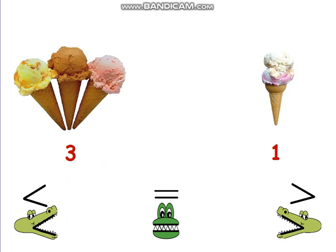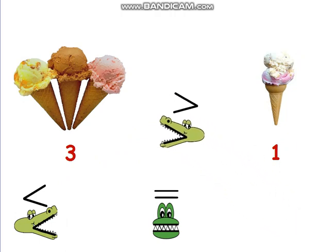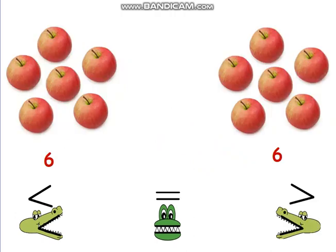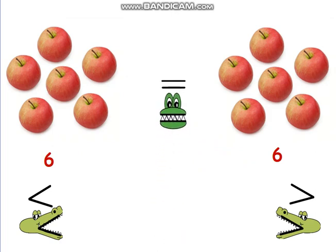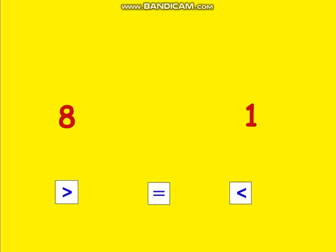The hungry alligator has to decide between three ice cream cones and one ice cream cone. Of course the greedy hungry alligator will open his mouth to eat the bigger one. What about having two equal numbers of apples? The greedy alligator is going to eat them both because they are equal.